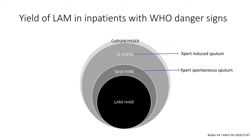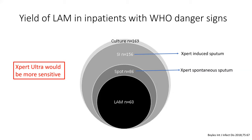Tom Boyles analysed our data to find the cheapest and quickest way to diagnose TB. Of roughly 170 patients with culture-confirmed TB, 60 were positive on urine LAM. Spot sputum picked up nearly all of the LAM-positive patients. Those who couldn't produce a spot sputum went on to have induced sputum, which covered almost the entire universe. So if you can get one decent induced sputum, you're very close to culture sensitivity, and the LAM isn't adding much — though Xpert at least tells you about rifampicin resistance. These data used old Xpert; with Xpert Ultra the result would be even better.